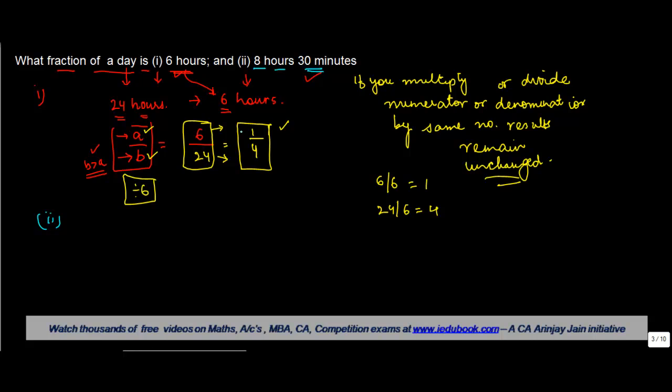Let's see the second part of this problem. This says 8 hours 30 minutes, and a day is 24 hours. Now the problem that we have here is that while one of them is in hours and minutes, the other one is in hours only. So the solution to this problem can be that you can convert either both of them into minutes, or convert them into hours. I'll do both of them for you.